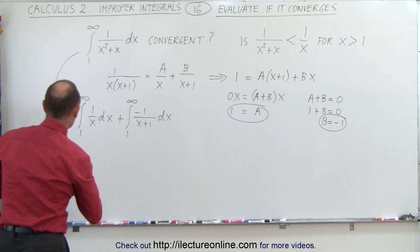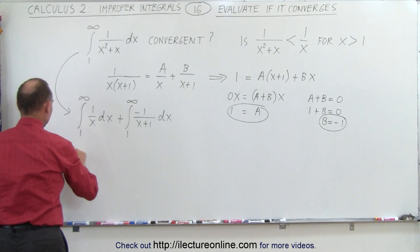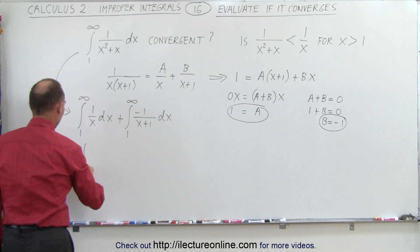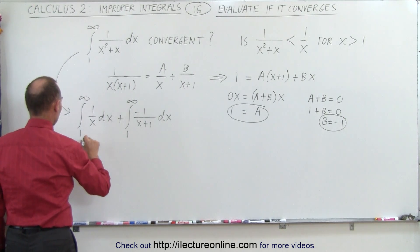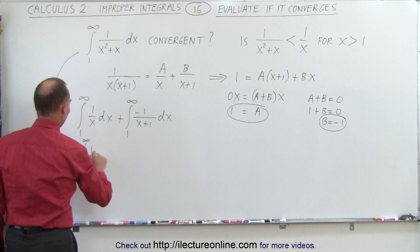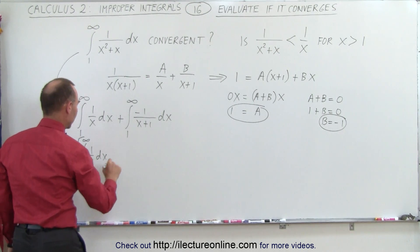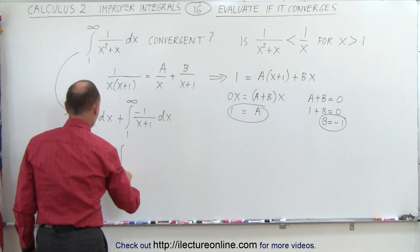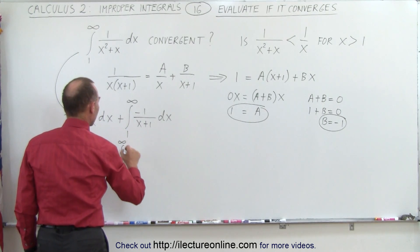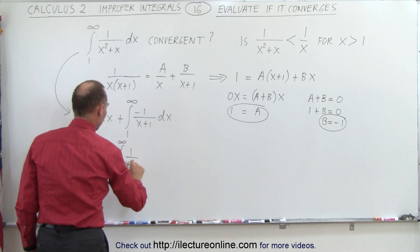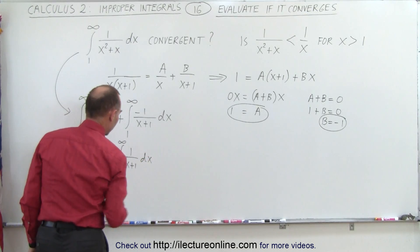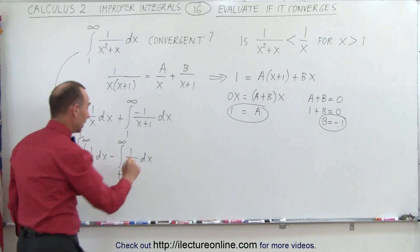Let's go ahead and integrate this. What we're going to do is take the limit as t approaches infinity of the integral from t to infinity of 1 over x dx, and then minus the integral from t to infinity of 1 over x plus 1 dx.